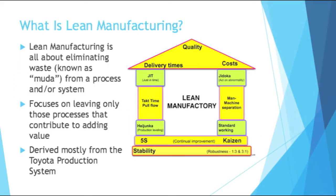What is lean manufacturing? Lean manufacturing is all about eliminating waste. The Japanese word for waste is muda, so even in the United States in industry, you'll hear people say muda and they mean waste. Whether it's from a process or a system, we're getting rid of waste. Lean manufacturing focuses on leaving only those processes that contribute to adding value. If it's not value added, it's waste. Lean manufacturing is derived mostly from the Toyota production system.